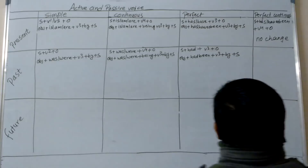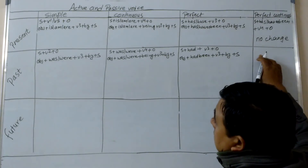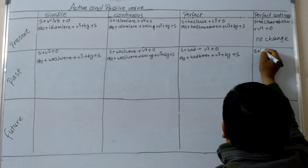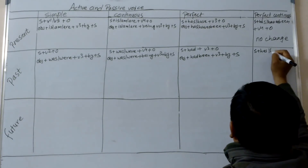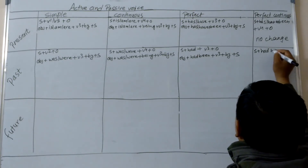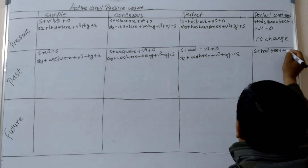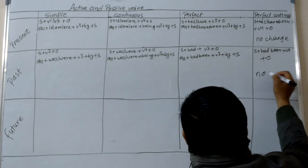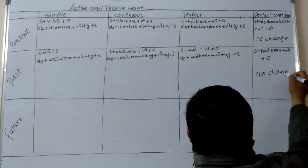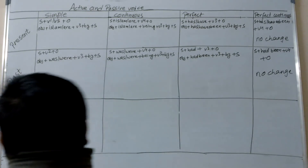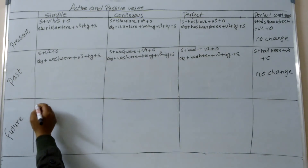The active voice formula of past perfect continuous is subject plus had been plus V4 plus object. There is no change in passive voice in past perfect continuous tense.